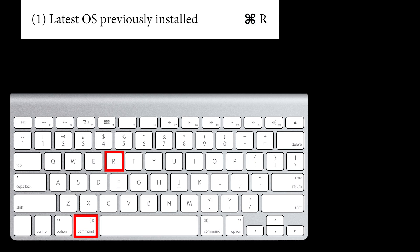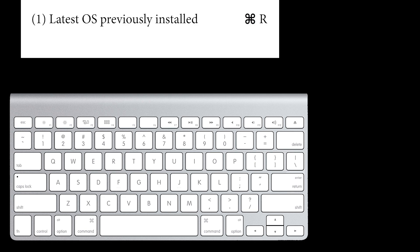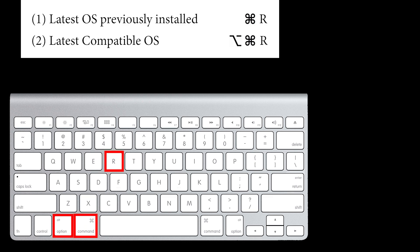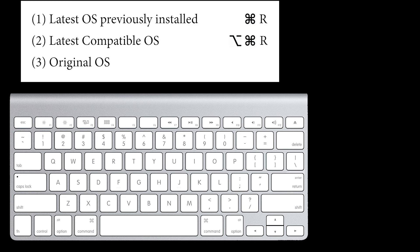If you've got an older Mac which won't support the latest operating system, you can upgrade to the latest Mac OS compatible with your Mac using Option, Command and R. And if you want to install the original Mac OS which came with the Mac, or the closest version which is still available, it's Shift, Option, Command and R.